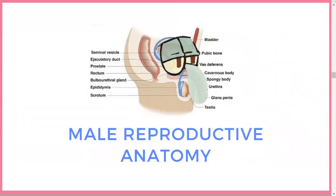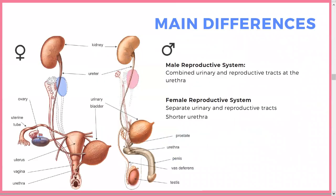Male reproductive anatomy. The main difference from a developmental view is that in males the urinary and reproductive tracts are combined, while in females they aren't. The gonads are external to the abdominal cavity in males, and males have a longer urethra — so they're at less risk of UTIs because the flow of urine kills bacteria over the longer distance.